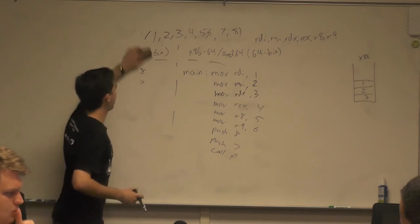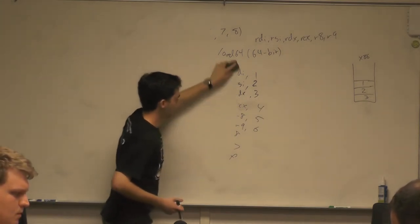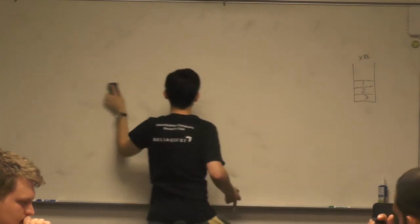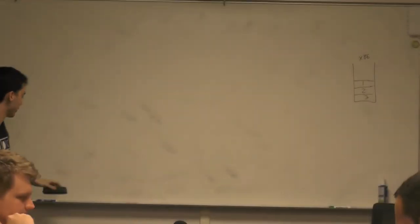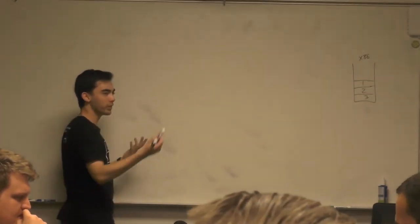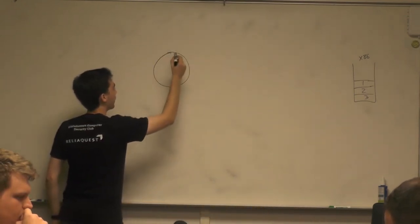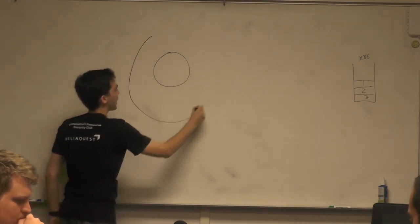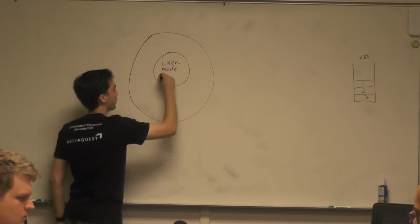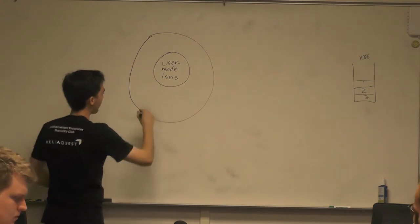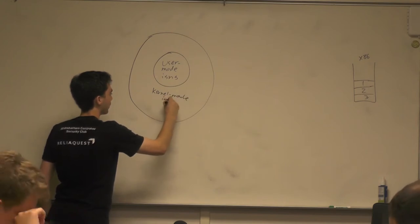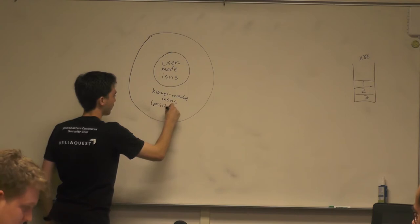So we know how to call functions with arguments. Has anybody taken OS yet? We have this concept of layers of privilege. Of the set of all instructions available, we can classify them into user mode instructions — sometimes called ring three — and outside of that is kernel mode or privileged instructions, sometimes called ring zero.